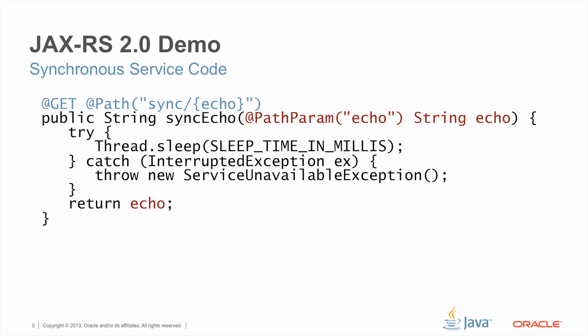Before we run the demo, let's look at some of the source code to understand the implementation. In the synchronous case, we have a resource method called SyncEcho that is annotated with @GET and @Path, and it has a single path parameter called echo. This is the data we're receiving from the client and that we're going to echo back. We're going to do a simulation of a long-running computation — we're just going to sleep for about a second before returning the data back to the client. That sleeping time is going to be sufficient for us to exhaust the number of threads in the server.